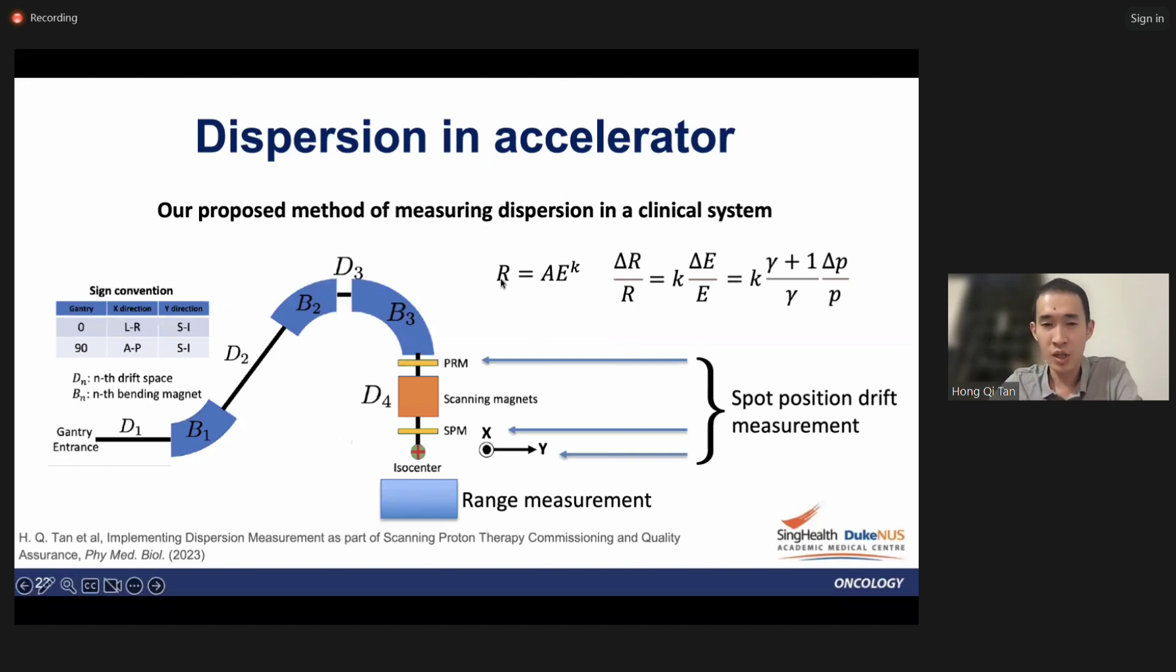In proton therapy, the range of the proton can be related to the energy using the Bragg-Kleeman relationship. If we do some simple algebra, differentiation and so on, you'll notice that delta R can be related to delta P over P. This means that if there's a momentum error in the extracted proton beam, it will translate to a range error. Using this knowledge, if we can measure the range error throughout the spill, we will have a way to measure the momentum errors.